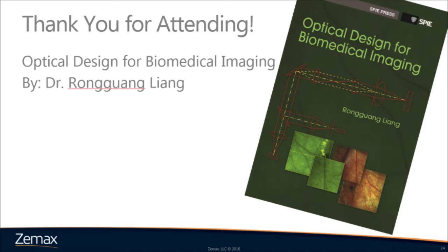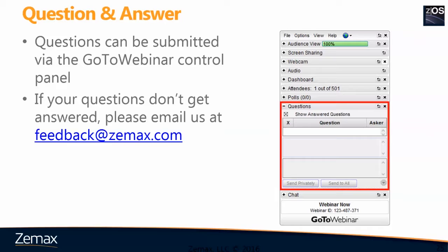Thank you very much, Ron. That was very interesting. Now we're ready for Q&A. There is a box in your lower right-hand corner where you can enter questions. We have a couple of questions queued up. The first few questions are asking about design constraints — specifically, are there any design constraints we should consider for the tube lens in microscope design?